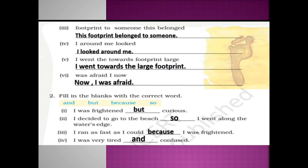Next: 'footprint to someone this belonged' — the answer is: This footprint belonged to someone. Next: 'around me looked I' — the answer is: I looked around me. Next: 'went the towards footprint large I' — the answer is: I went towards the large footprint. Next: 'was afraid enough now I' — the answer is: I was afraid. Check your answers; if you did anything wrong, you can change it.